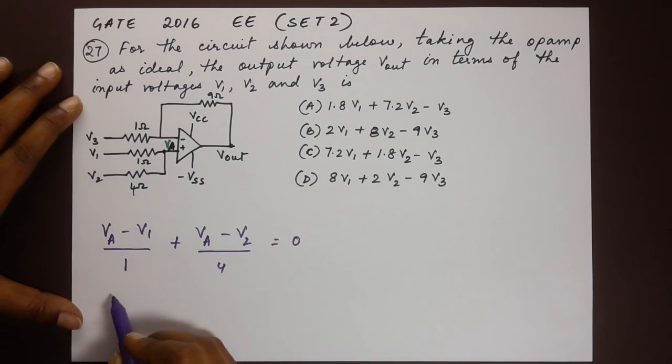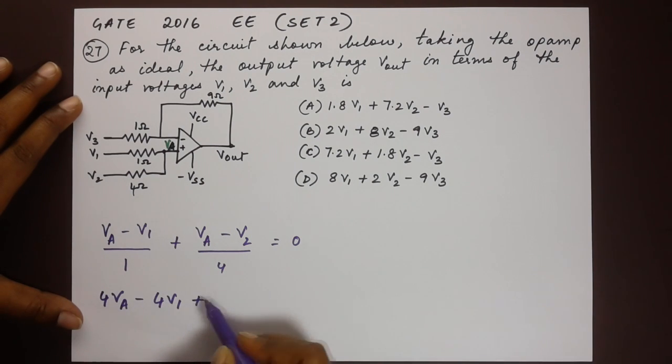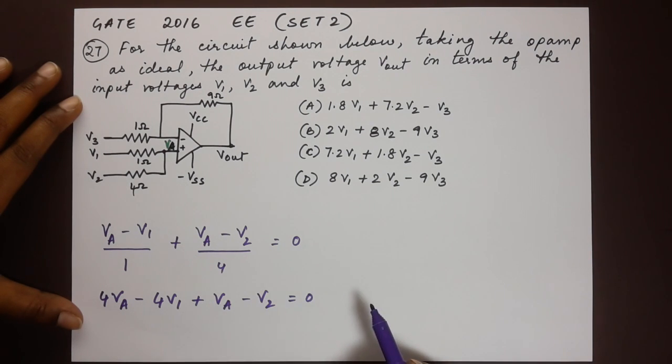Let's simplify this and see what we get. We get 4Va minus 4V1 plus Va minus V2 is equal to 0. That would give us 5Va minus 4V1 minus V2 is equal to 0.